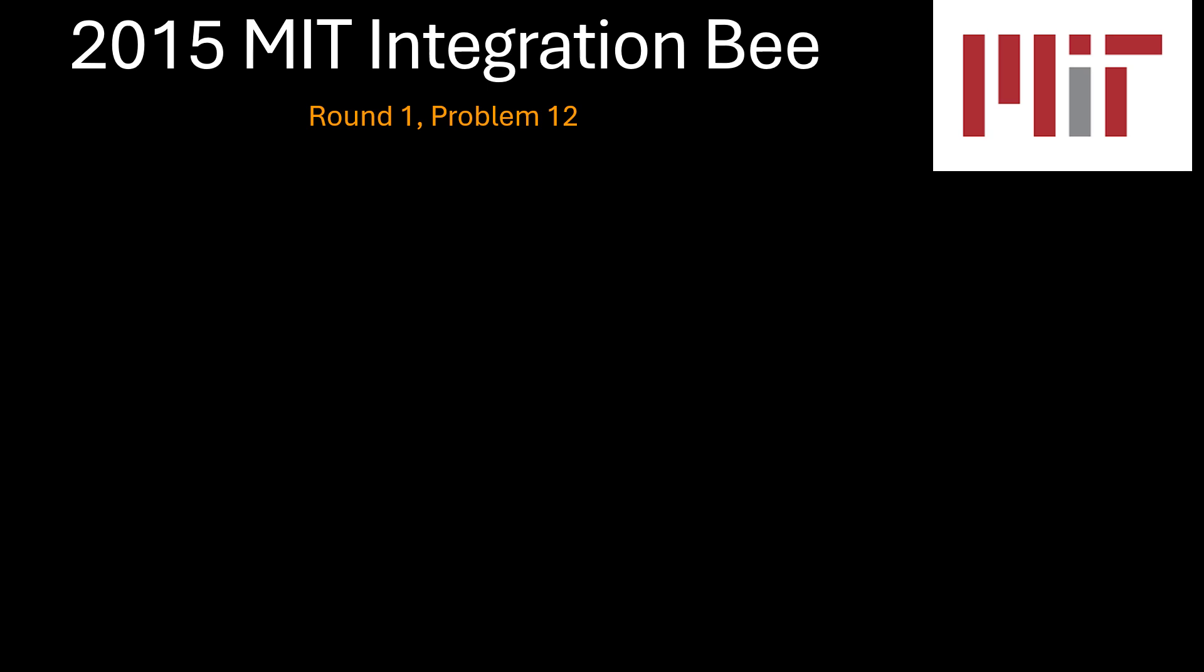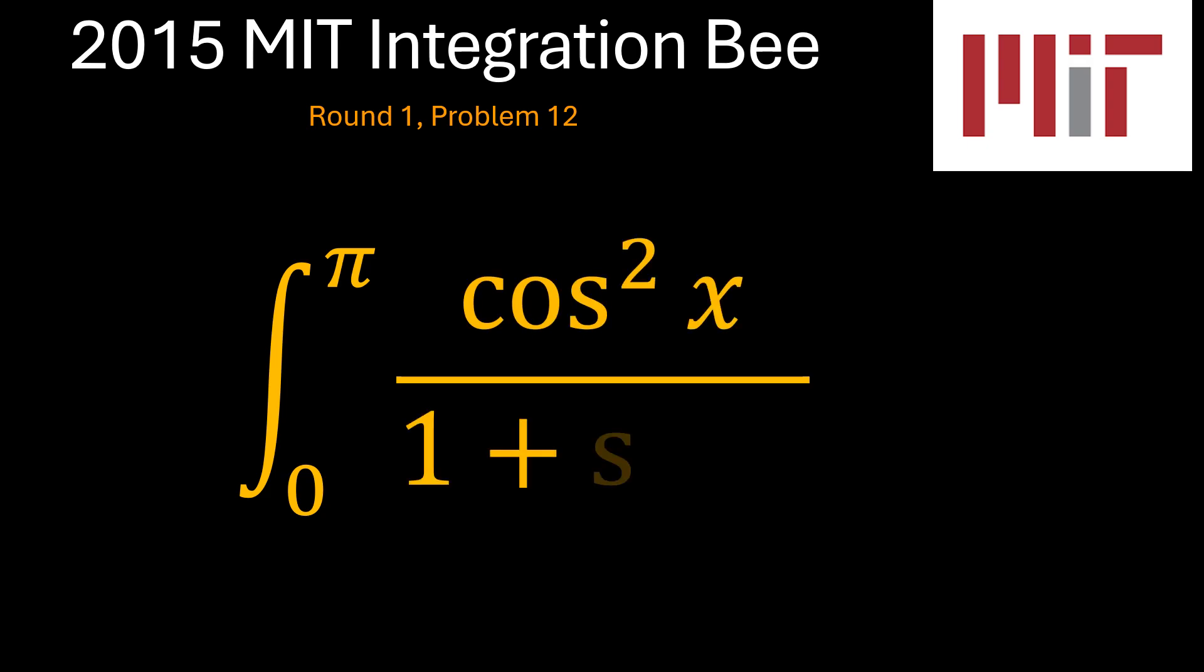The next item is problem number 12 of round 1, 2015 MIT integration B, which is a definite integral from x equals 0 to x equals pi over cosine squared x over 1 plus sine x.